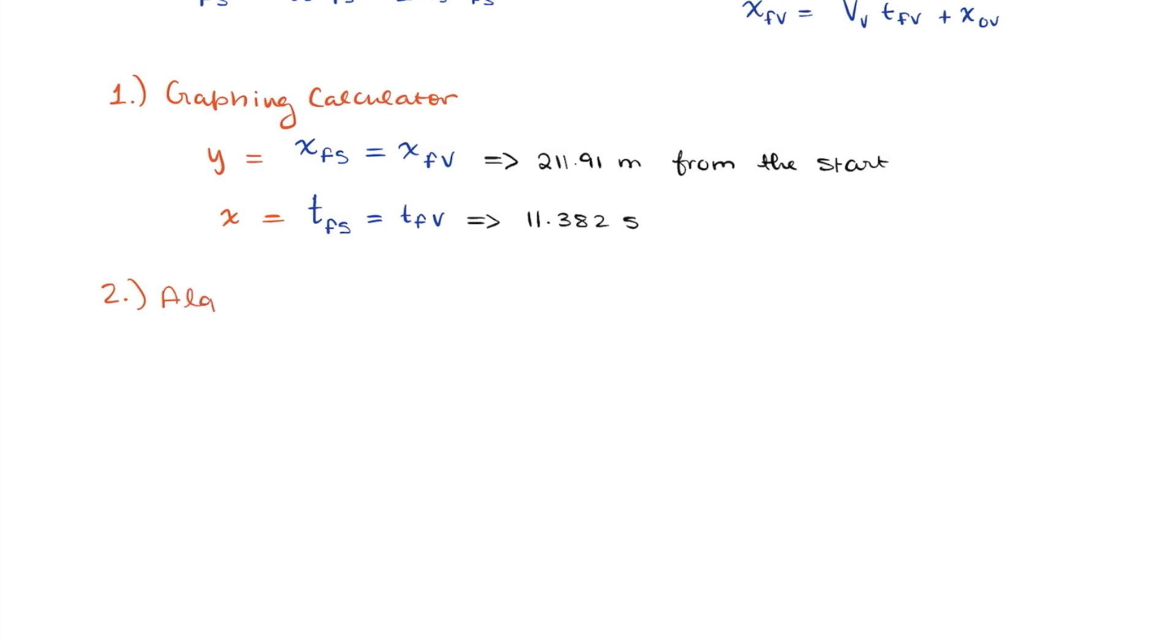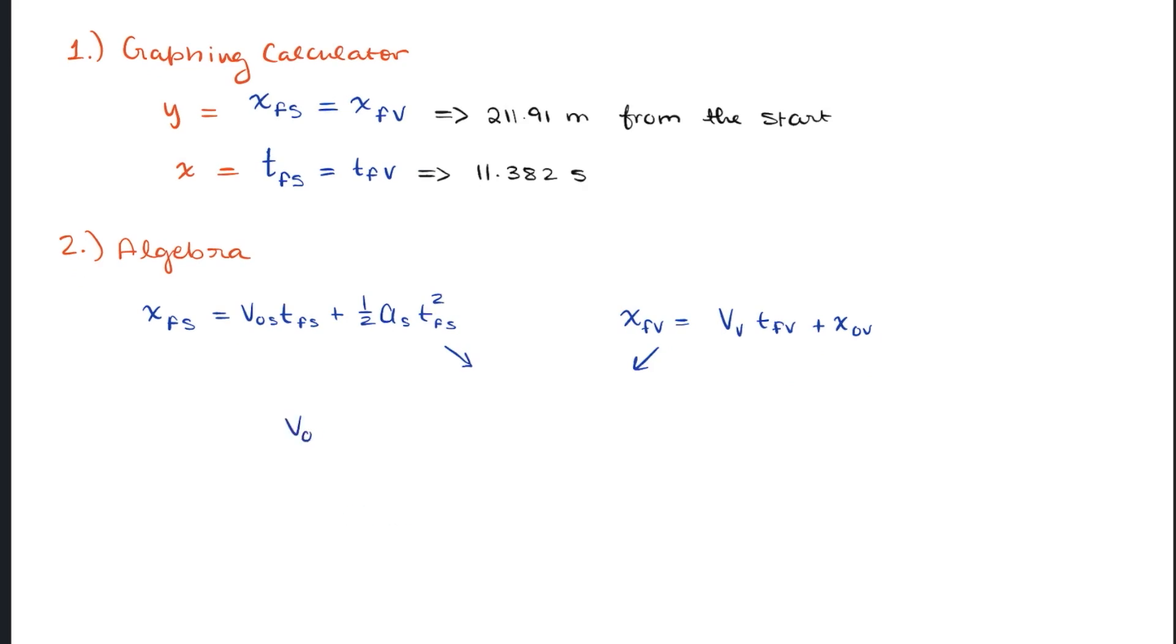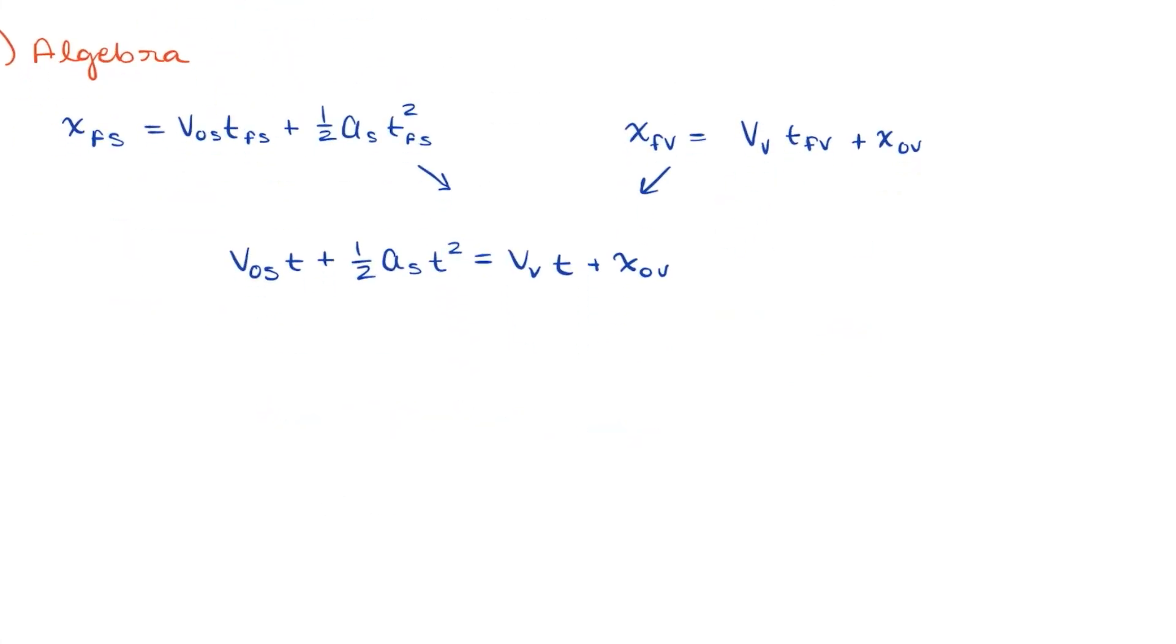We can also just solve the rest of the equations algebraically, by plugging one of the equations into the other. Since both of them have been solved for the final position, we can just set them both equal to each other. Now, we need to only find the final time here. And they no longer have the v and s subscript because both of their times have to be the same. So we can isolate our variable properly.